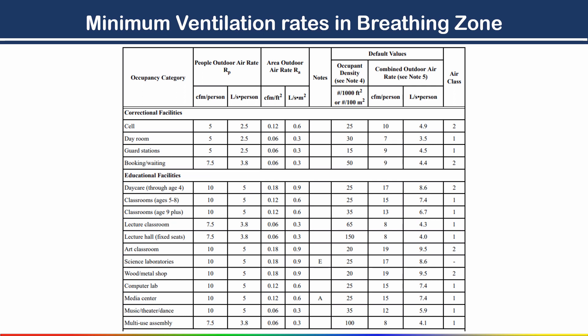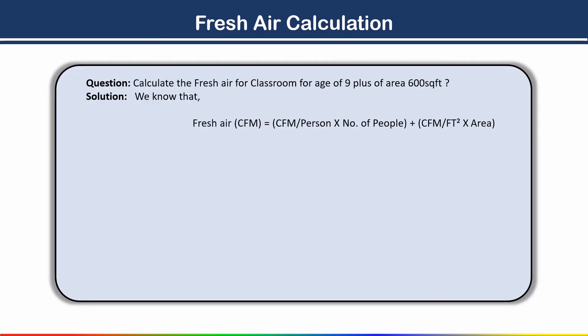In the ASHRAE ventilation standard, under the 'Minimum Ventilation Rate in Breathing Zone' table, you will find different options. The first column gives the occupancy category, then CFM per person value, then CFM per square feet value. For our question — classroom age 9 plus — the CFM per person value is 10, and the CFM per square feet value is 0.12.